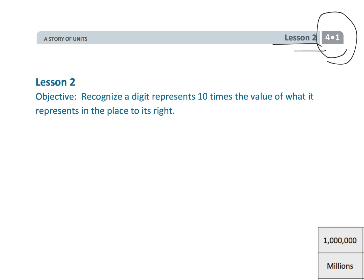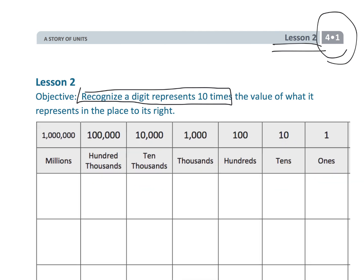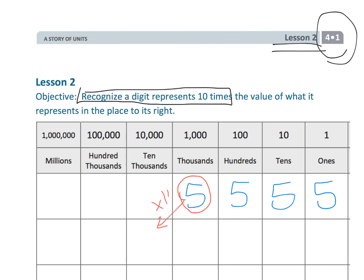This is fourth grade, module one, lesson two. We're going to be continuing talking about place value, and we're going to continue that concept of recognizing that the columns are related by a factor of ten. For example, if you have five thousands and you have five hundreds, five thousands is ten times bigger than five hundreds, five hundreds is ten times bigger than five tens, and five tens is ten times bigger than five ones. So if we were going to multiply by ten, it would give us five in the ten thousands column. Similarly, if we were to take five and multiply by ten, it would give us five in the thousands column.